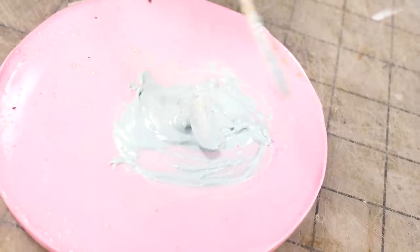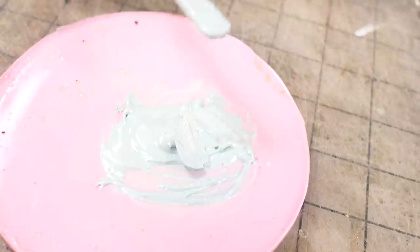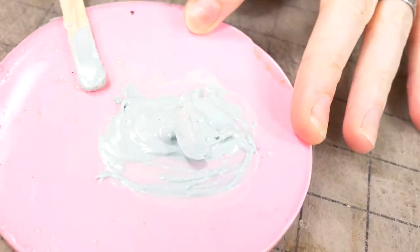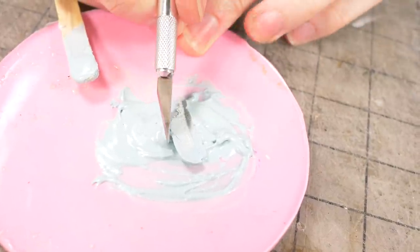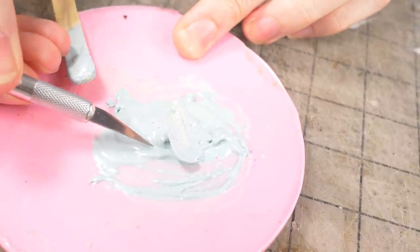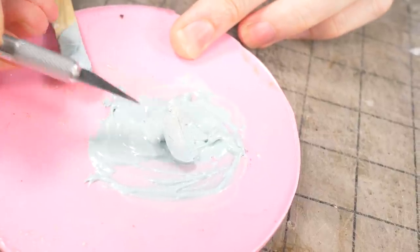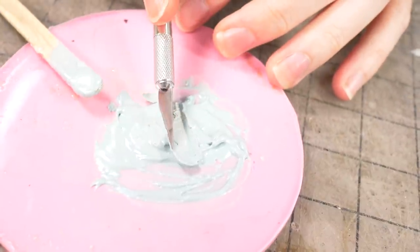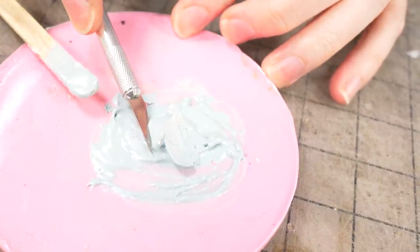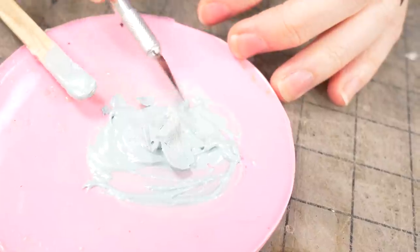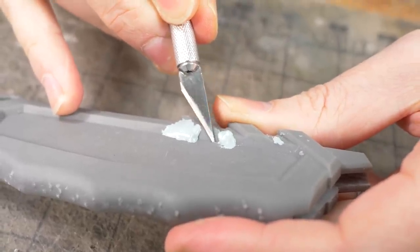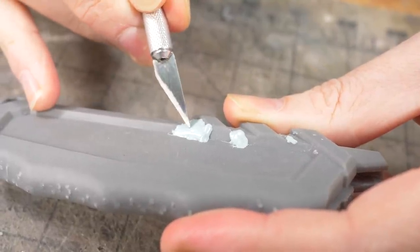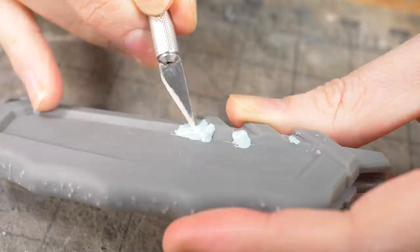Only a couple minutes later and our filler has started to kick. It's a little rubbery still, but it is solid now. I can go in with my X-Acto knife and cut some of the detail that I need, avoiding turning it into dust. I'll have to still do some sanding, but this gets rid of the bulk of the material without having to do a ton of sanding.